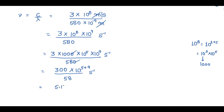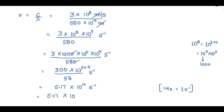300 divided by 58 gives 5.17, so the frequency is 5.17 × 10¹⁴ second inverse. Since 1 hertz equals 1 second inverse, the frequency of yellow light is 5.17 × 10¹⁴ Hz.